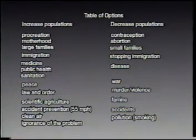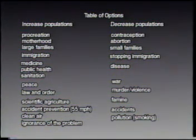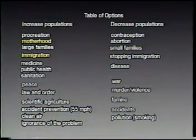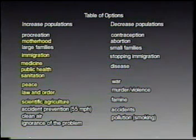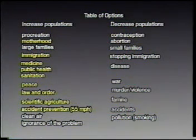In the left-hand column are things we should encourage if we want to raise the rate of growth of population and make the population problem worse. Everything in the list is as sacred as motherhood: immigration increases population; medicine, public health, and sanitation lower the death rate — very important to me if it's my death — but anything that lowers the death rate makes the population problem worse. There's also peace, law and order, scientific agriculture reducing famine, the 55 mph speed limit saving thousands of lives, and clean air.